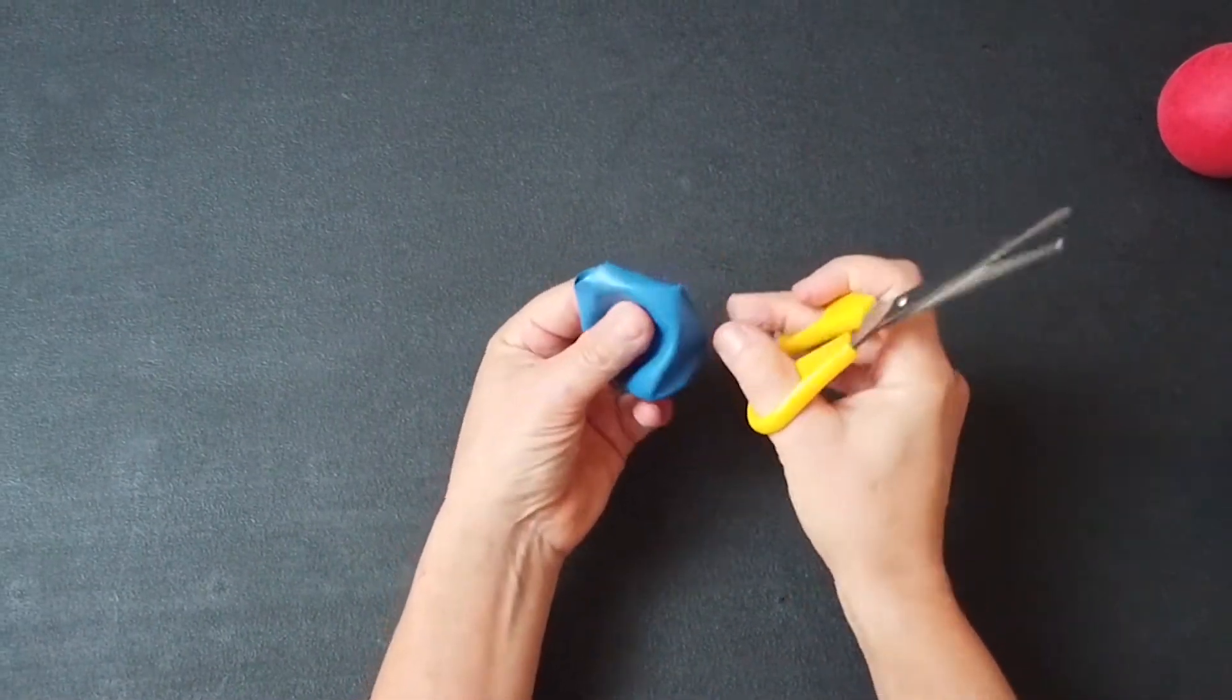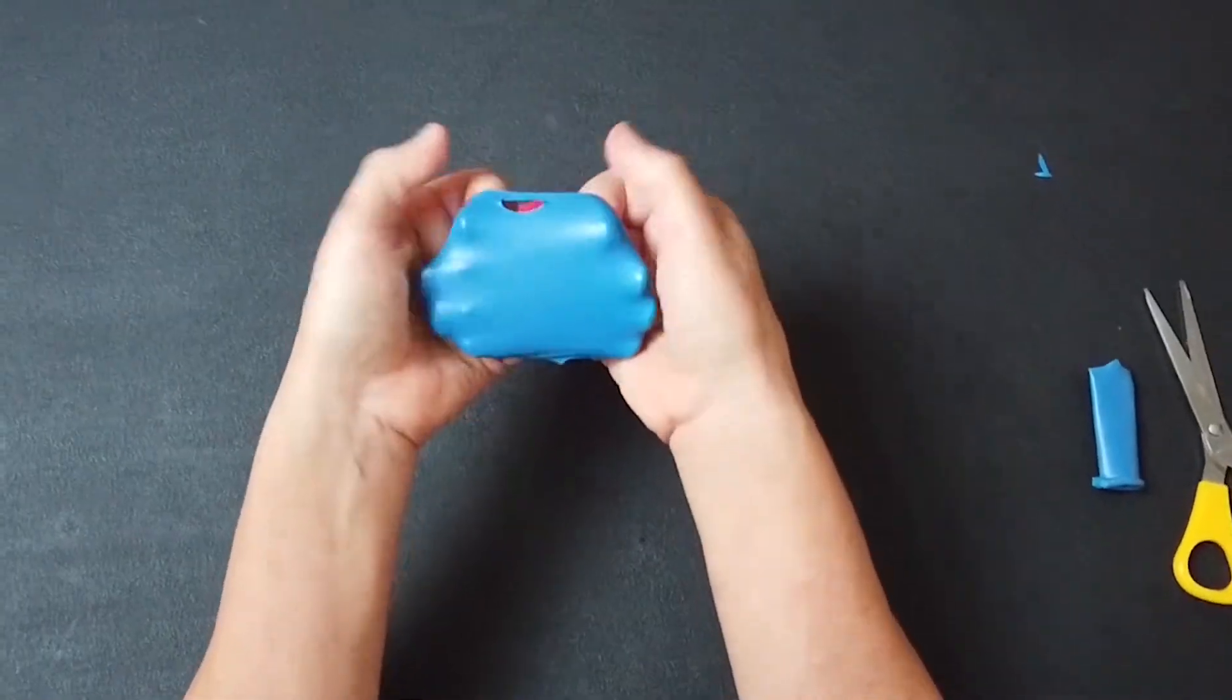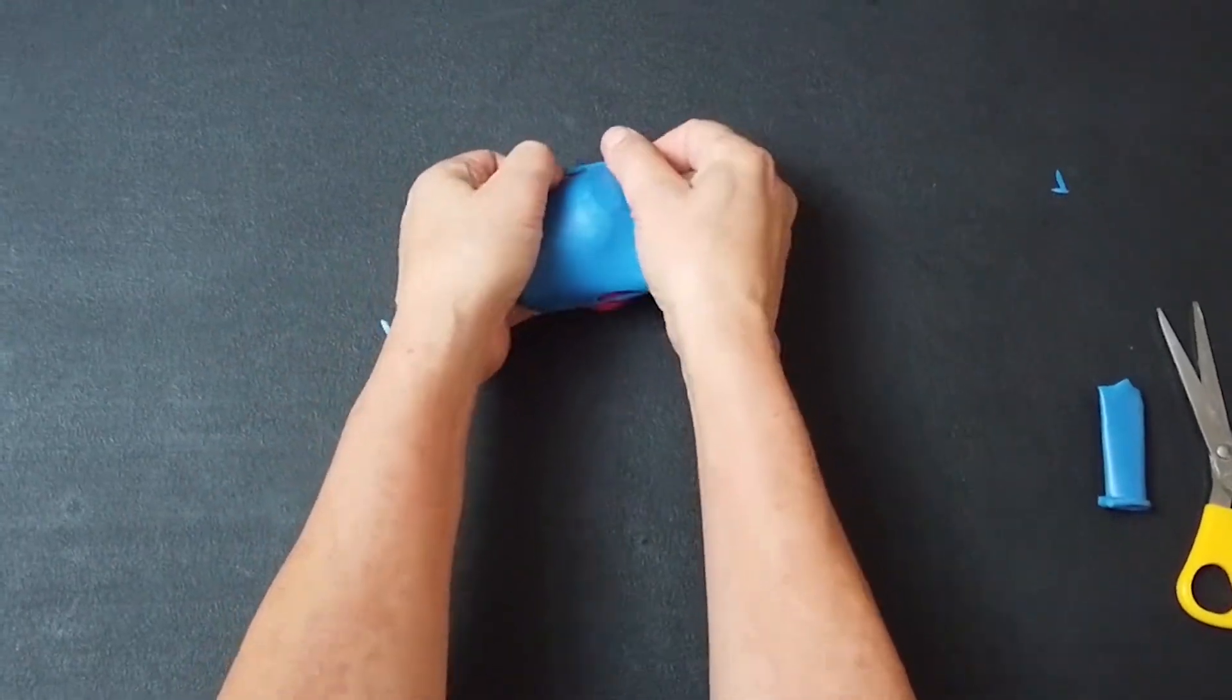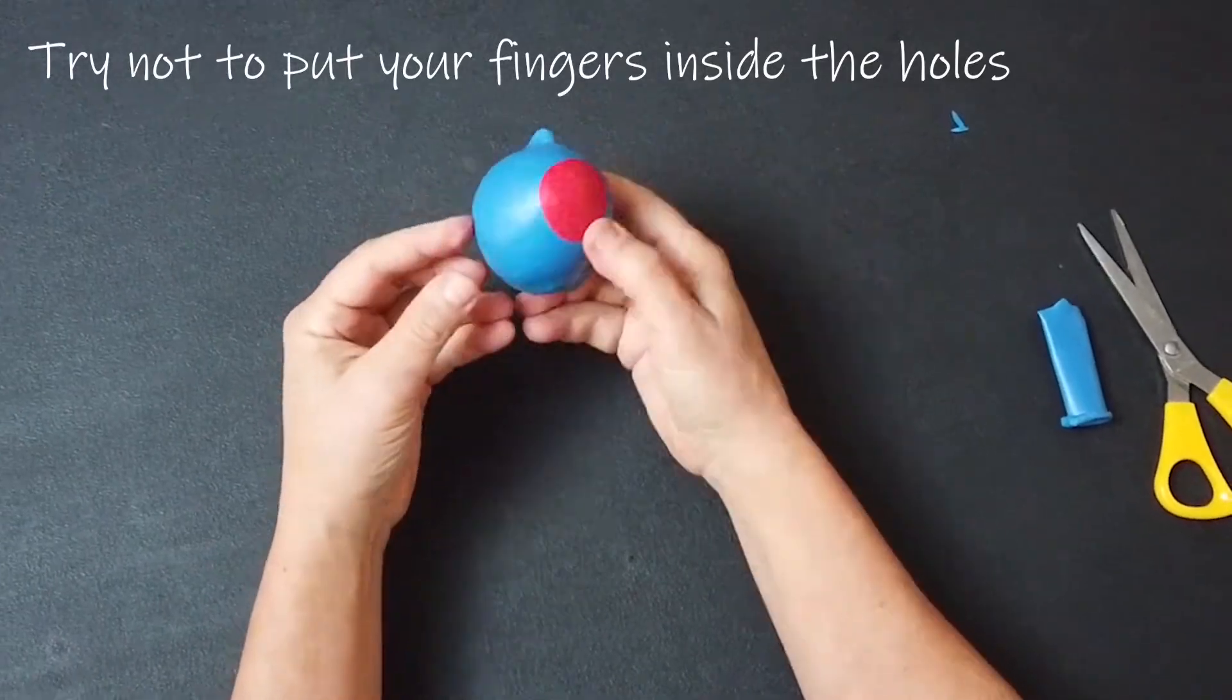So they're just little nicks you're really cutting into the juggling ball. Don't cut the bottom, just a couple around the sides. And you get your fingers inside. Don't put them inside the holes.